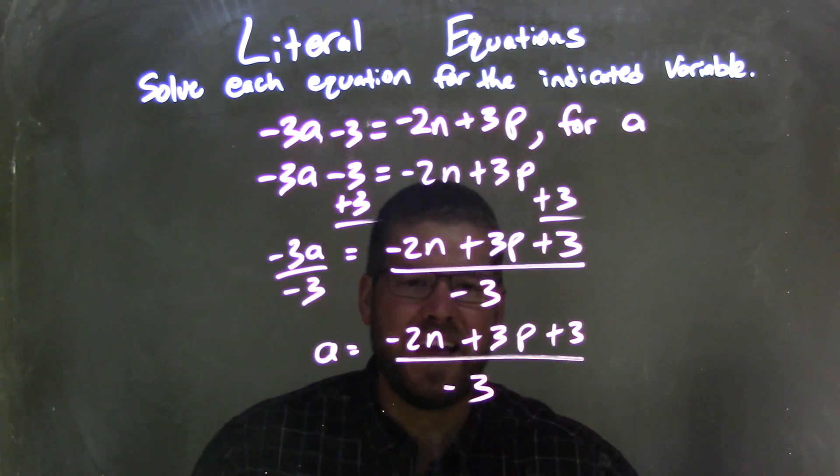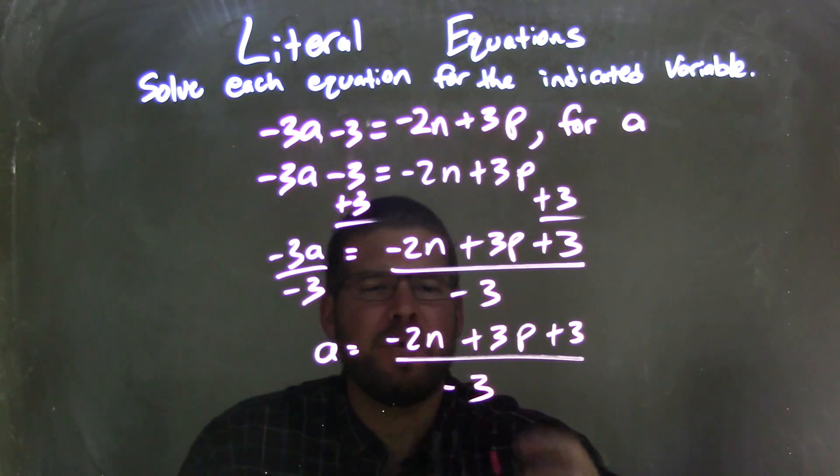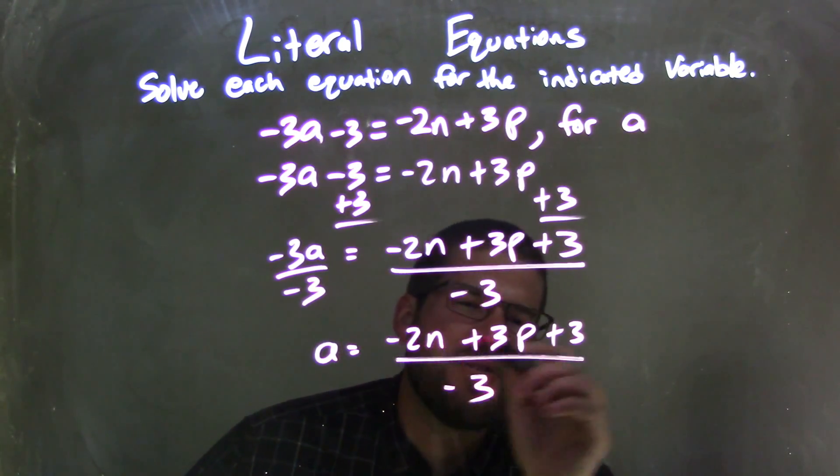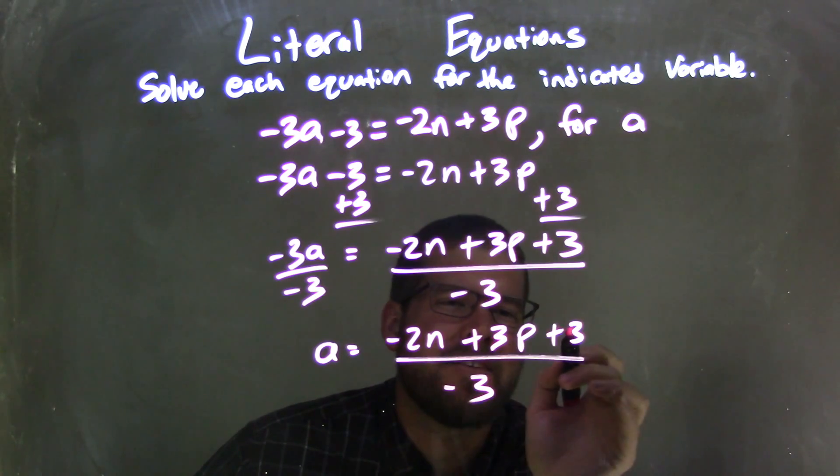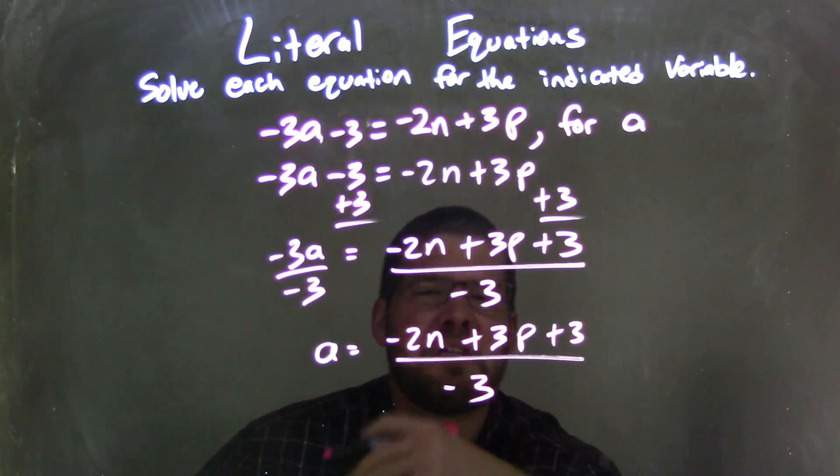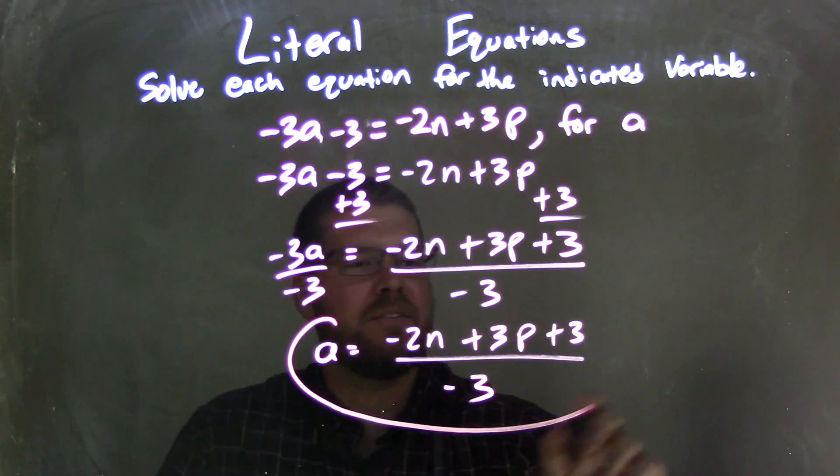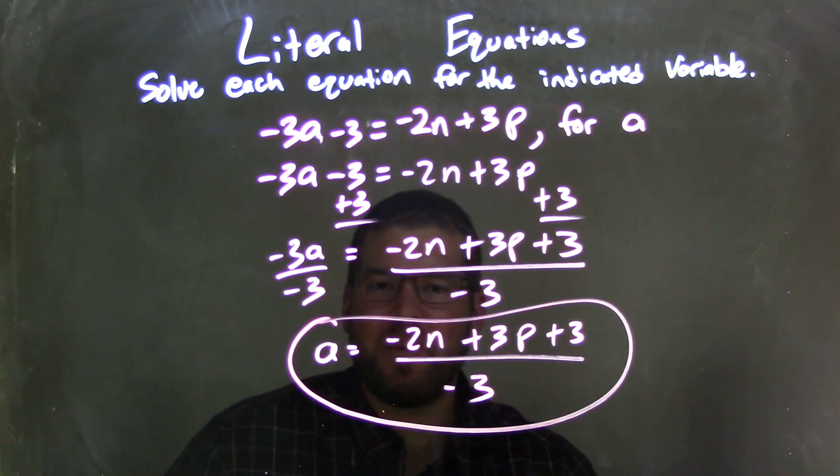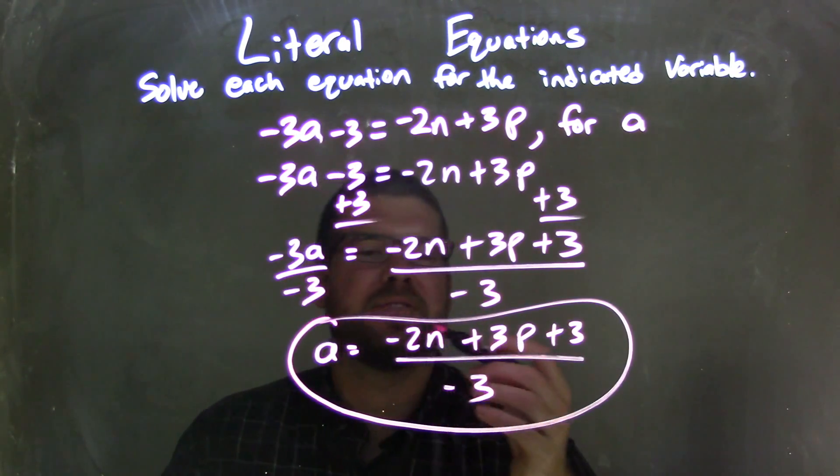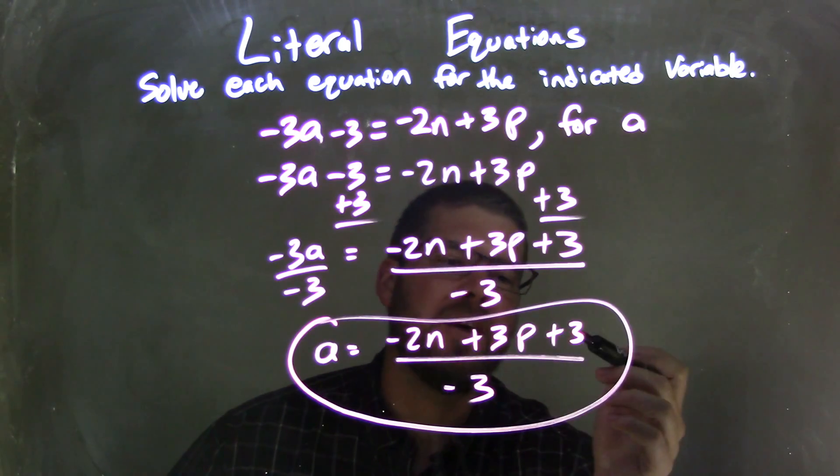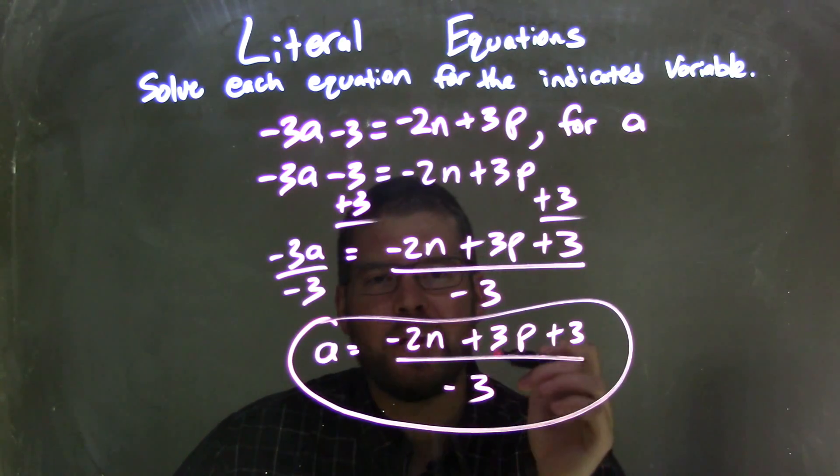Some people might have different preferences when they want to distribute the negative into all parts, and it makes that negative, this negative, now positive, this positive. I don't think it's necessary. I think it's fine the way it is. a is by itself, and there we go. Our final answer is a equals negative 2n plus 3p plus 3 all over negative 3.